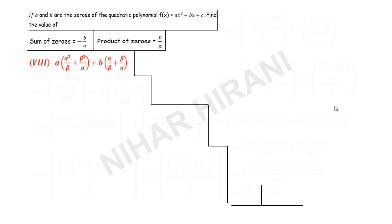Let us solve this question. For the previous seven questions I have already provided video solutions — you can refer to the description. If alpha and beta are the zeros of the quadratic polynomial ax² + bx + c, find the value. The two most important pieces of information are: sum of zeros = -b/a, and product of zeros = c/a. If you know the theory of this concept, you can easily get this information.